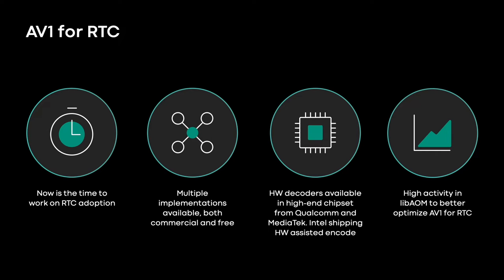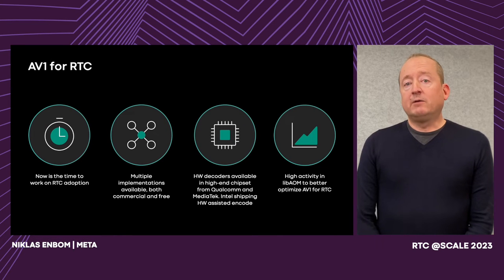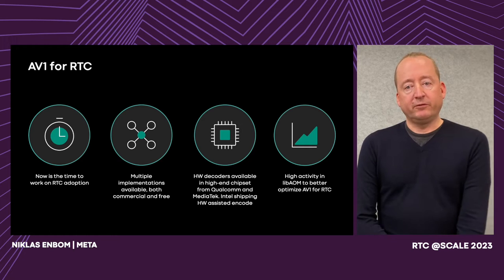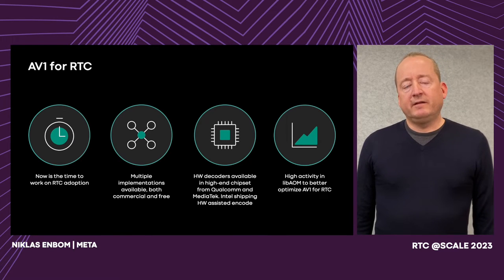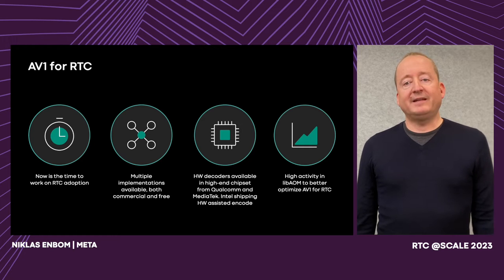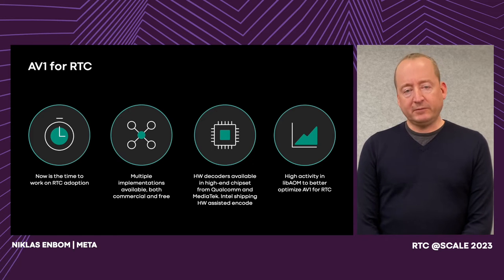The RTC use case is always lagging codec adoption compared to streaming, since we need to do both encode and decode on the device in real time. But we believe now is the right time to adopt AV1. Right now, there are multiple implementations available — both commercial and open source versions — and we're also seeing hardware offloads starting to ship in devices powered by MediaTek, Qualcomm, and Intel chipsets this year. Especially the open source landscape is very attractive. If you look at LibAOM and the changelog there, you can see intense work ongoing focused on the real-time use case with lots of performance improvements, but also improvements for quality and rate control, which is very important for us.